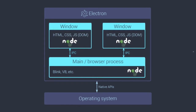Both NWS and Electron abstract those native APIs with their own modules. So you can easily create a tray icon or open the default app for a mail link programmatically.